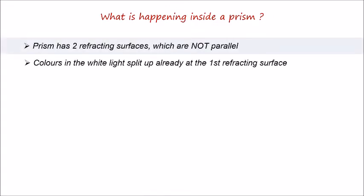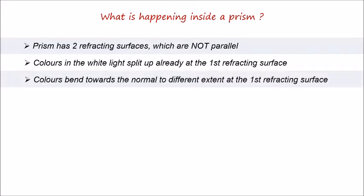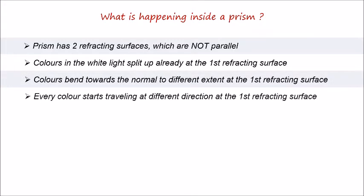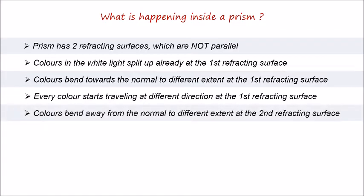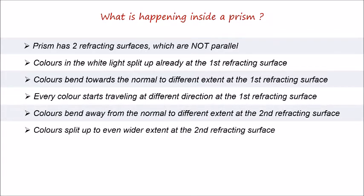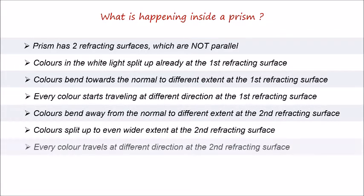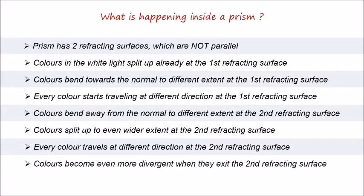What is happening inside a prism? A prism has two refracting surfaces which are not parallel. Colors in the white light split up at the first refracting surface — each color bends towards the normal to a different extent. Every color starts traveling in a different direction. At the second refracting surface, colors bend away from the normal to different extents, splitting further. Every color travels a different direction, becoming even more divergent when exiting.